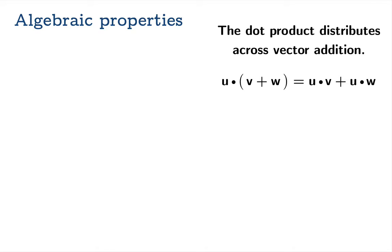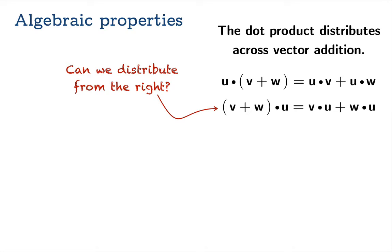We only distributed from the left side, so the question is: can we distribute from the right? Is it true that if you took the sum of two vectors and dotted it into a vector on the right side, does that distribute the same way — equal to v dot u plus w dot u? The answer is surely yes, and you could repeat the same kind of proof. But let's see if we can use all the known facts about the dot product to reproduce this proof in a slicker way.